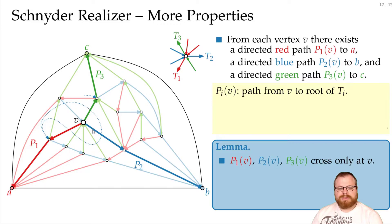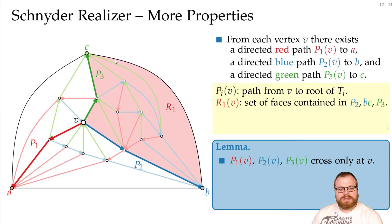These three paths now also give us three regions of this triangulated graph. First, we get the red region, which is spanned by the green path, the blue path, and this edge on the outer face. Then we have the blue region here and the green region down here.